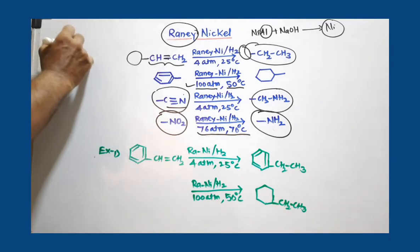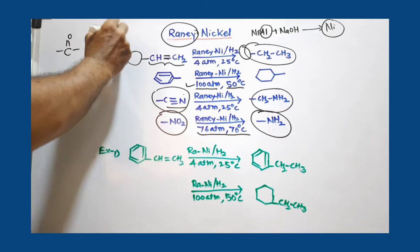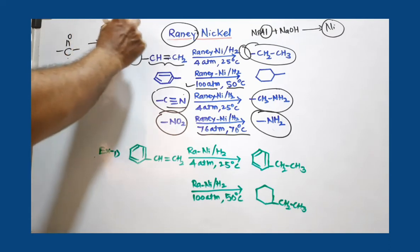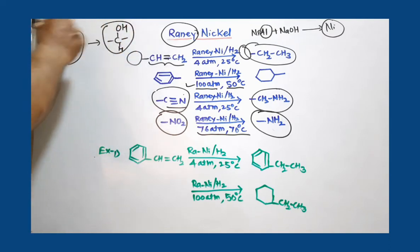Even carbonyl group can be reduced. This group is converted to the alcohol, alcoholic group. One H is added here and one H is added here. If your compound is having CO group, you have to reduce it. Otherwise, if you want to keep that group as it is, you have to protect this group.